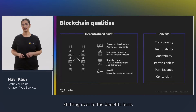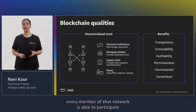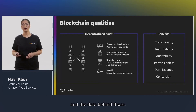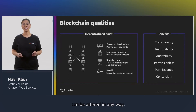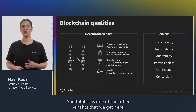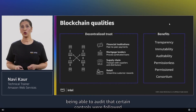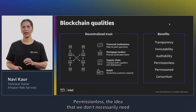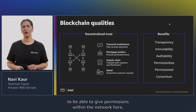Shifting to the benefits: in terms of transparency, every member of the network is able to participate and have visibility into what transactions have happened and the data behind those. Immutability means transactions can't be altered in any way once they've happened — they're permanent in nature. Auditability is another benefit, being able to audit that certain controls and regulations were followed. And permissionless — the idea that we don't necessarily need certain central authorities to give permissions within the network.